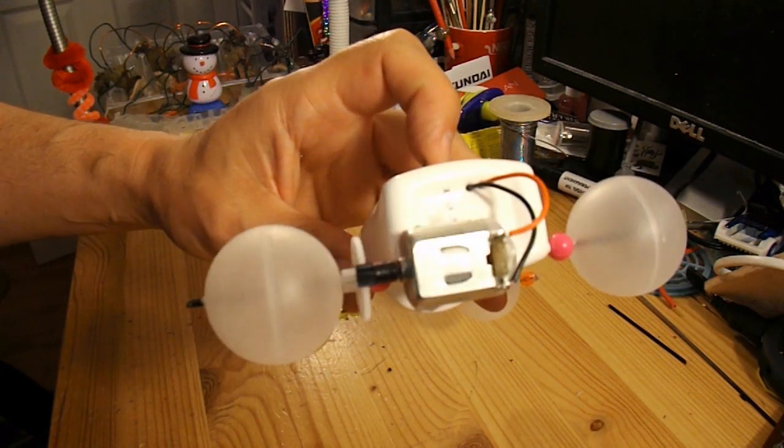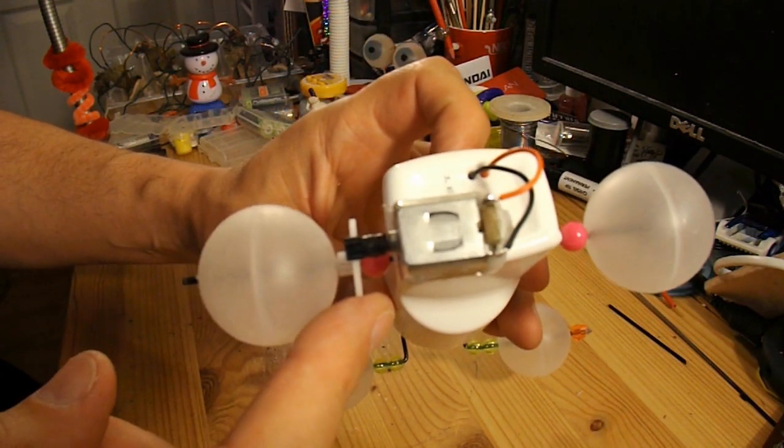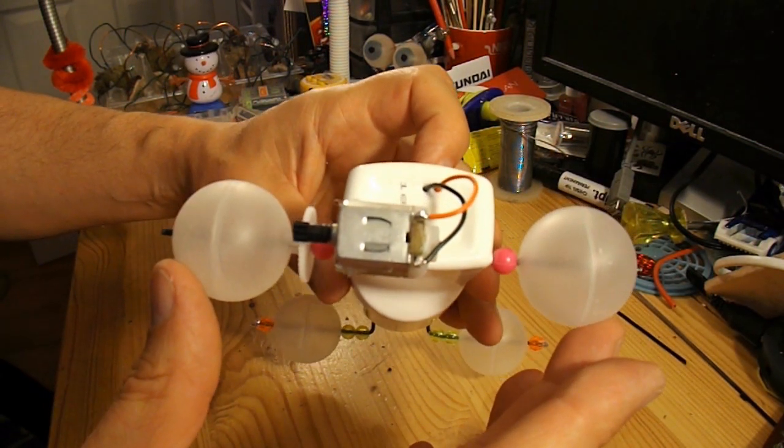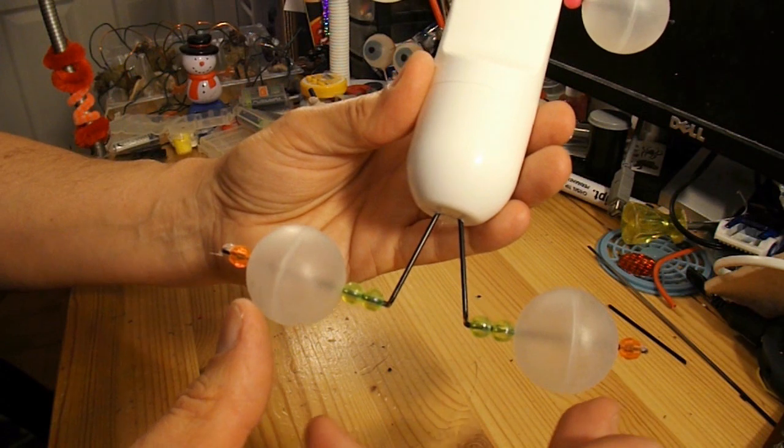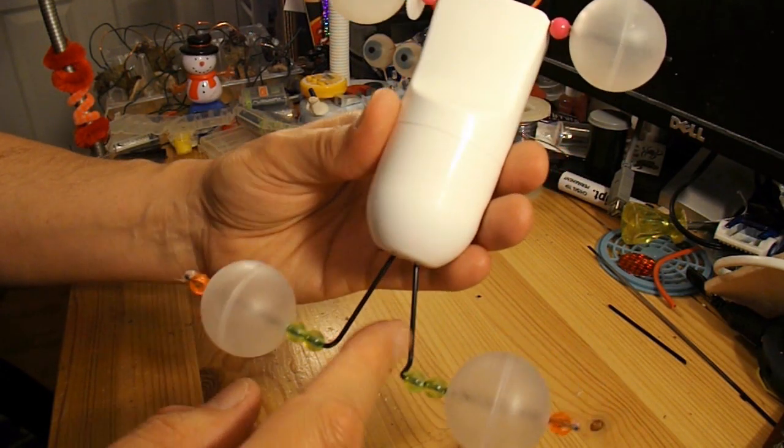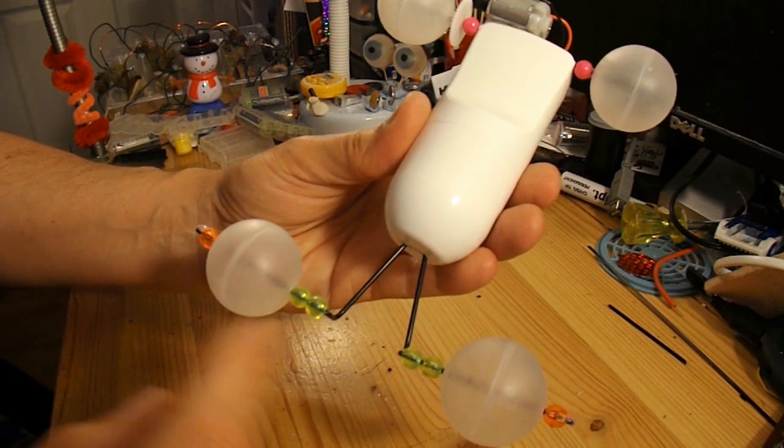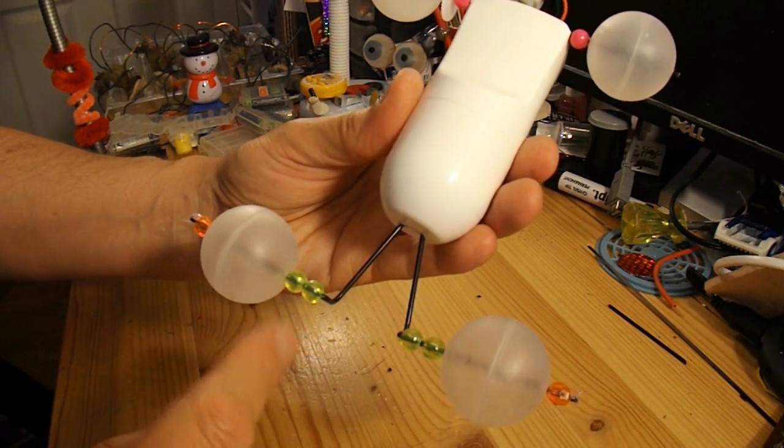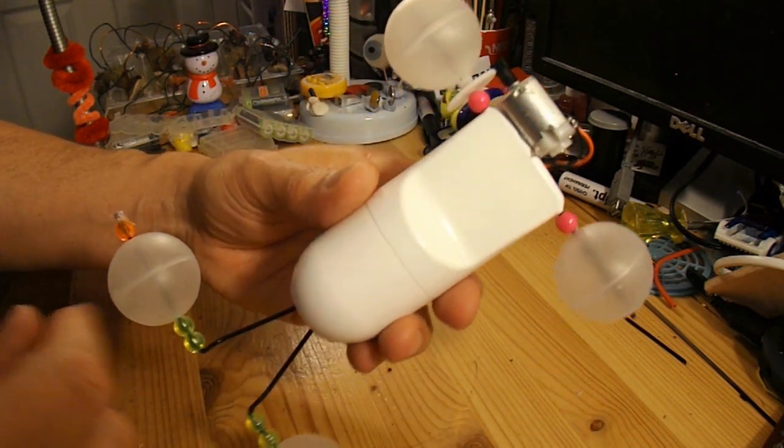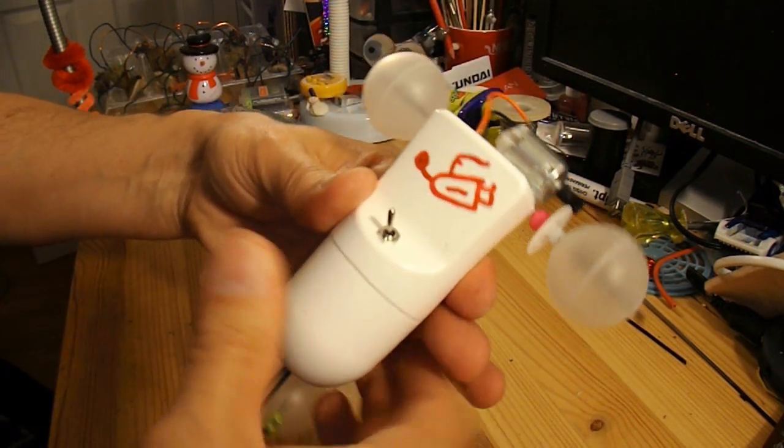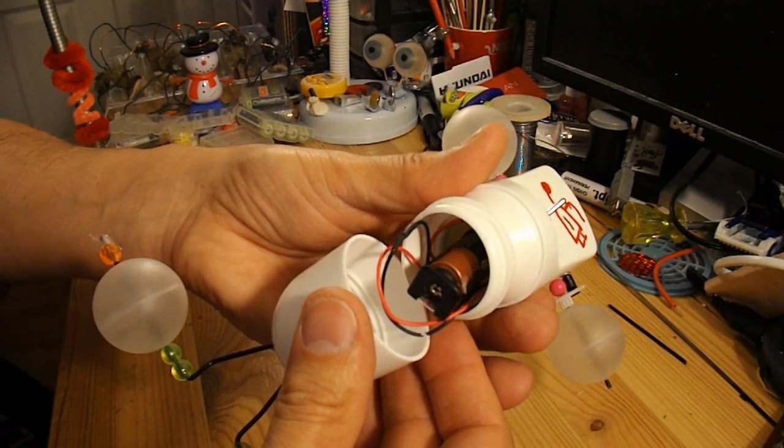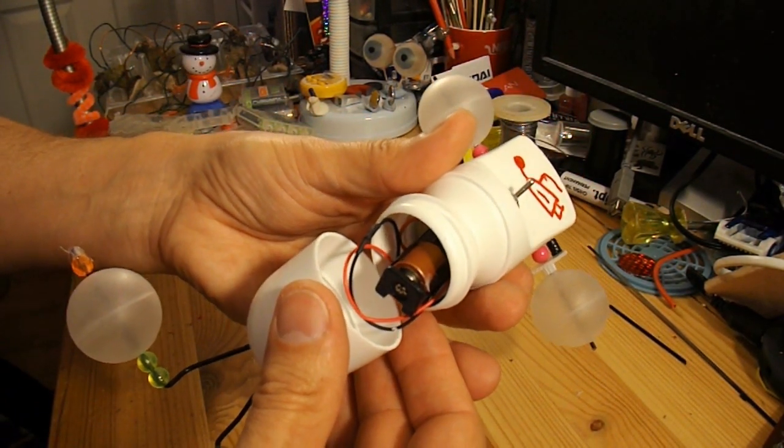All right, so electric motor, gear wheels, the balls from the roll-on deodorant. Same at the front, bicycle spoke bent into a nice shape. Some cheap plastic beads as spacers. Bicycle spoke for the back axle as well. And inside, a single AA battery.